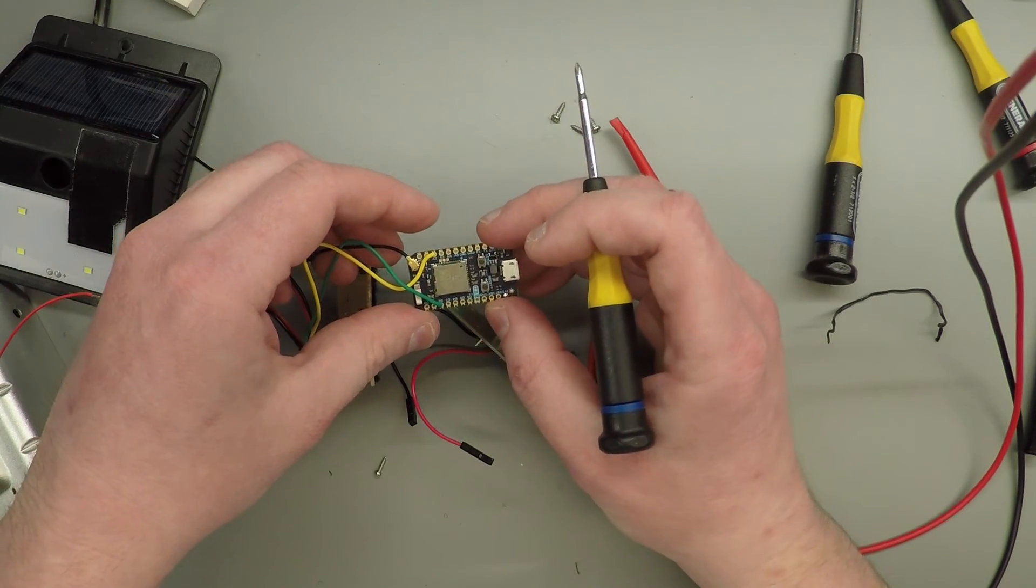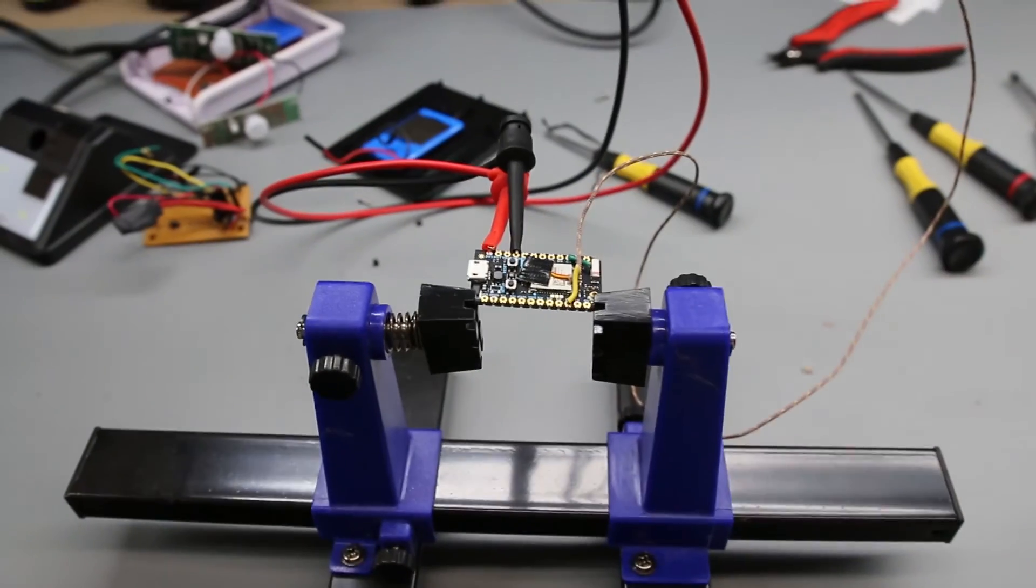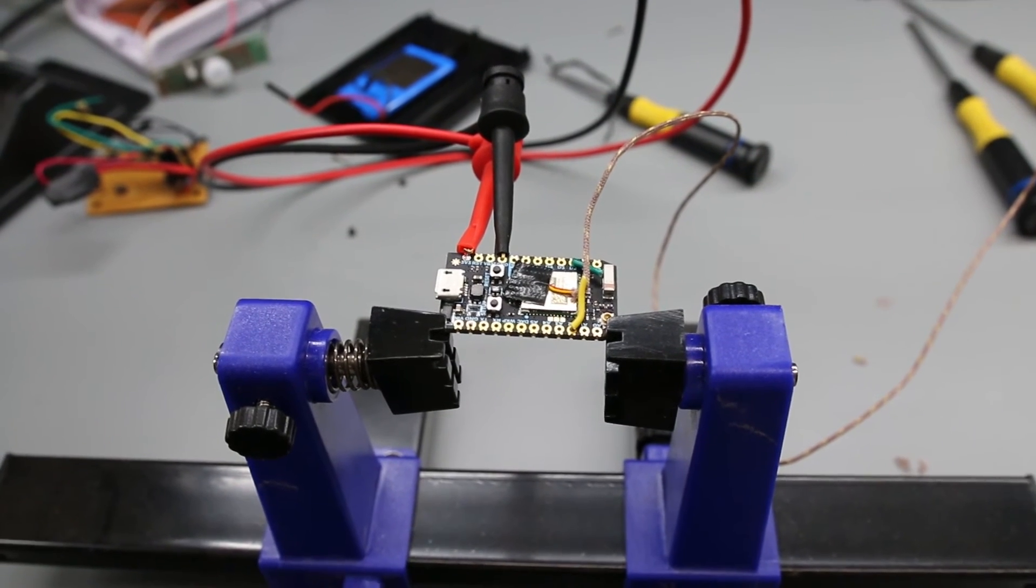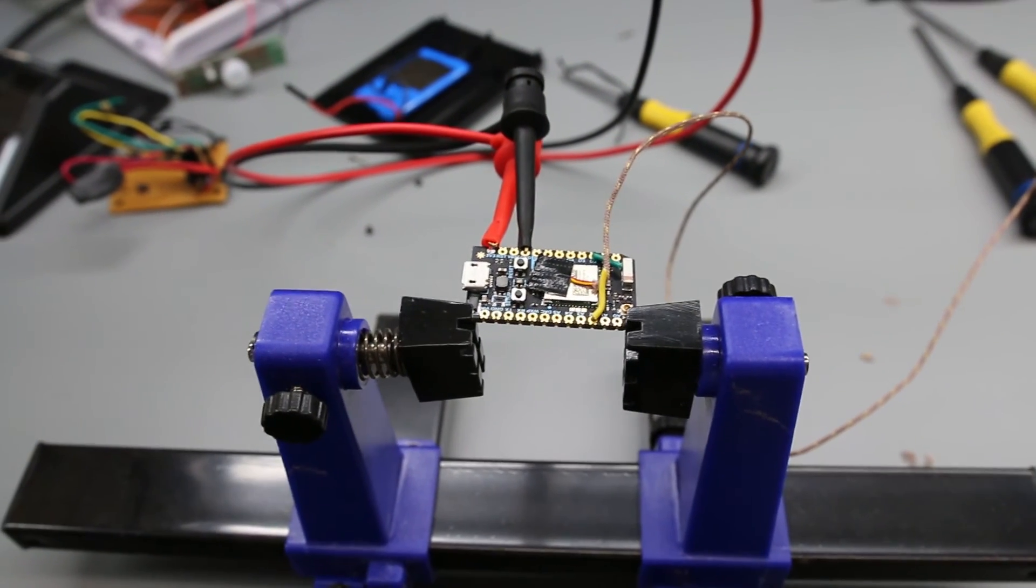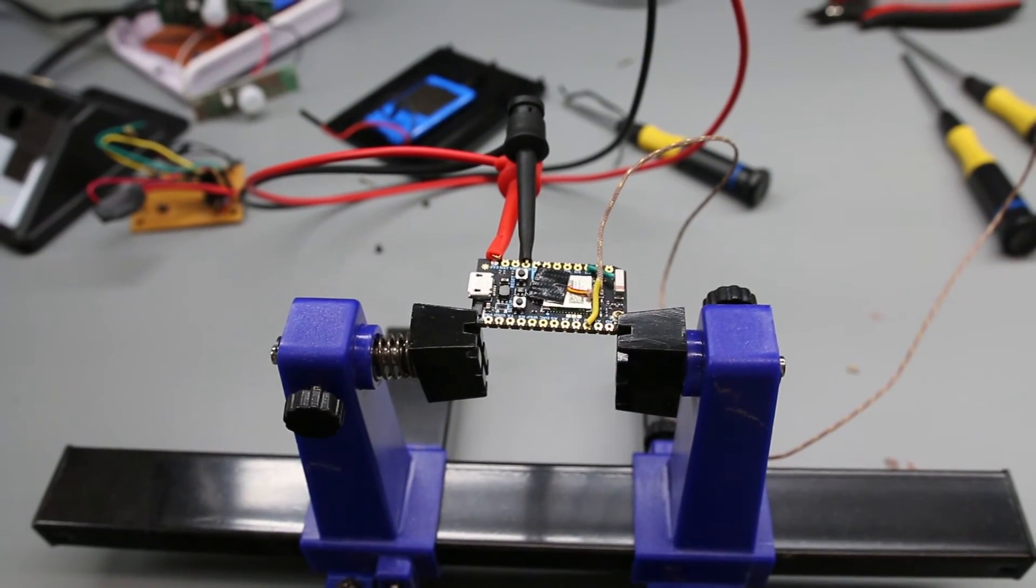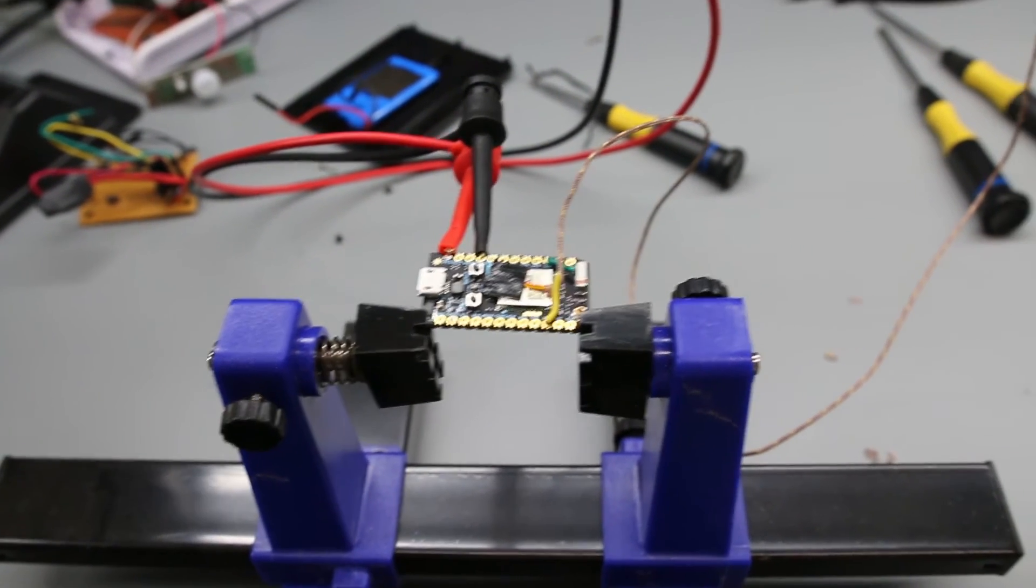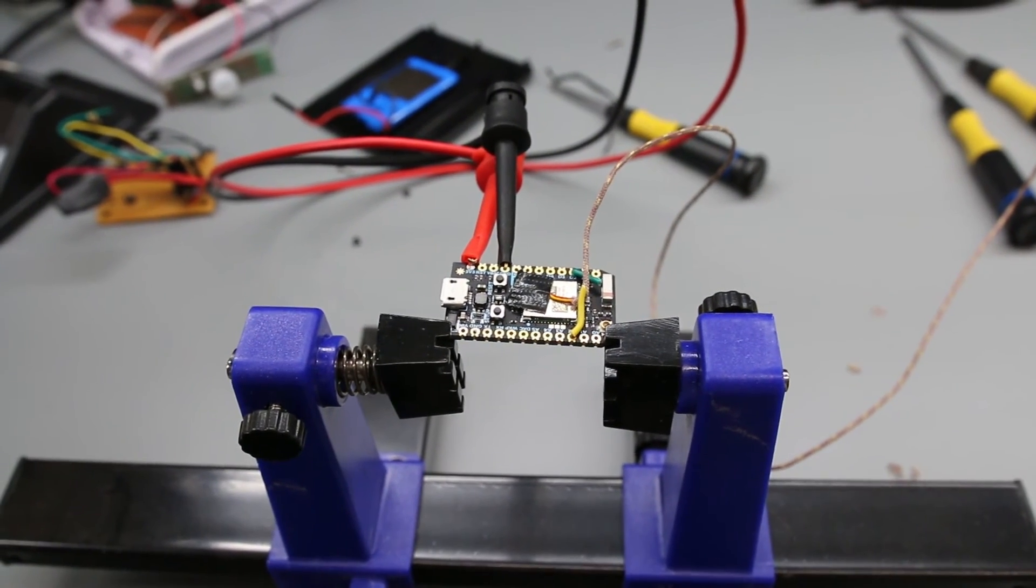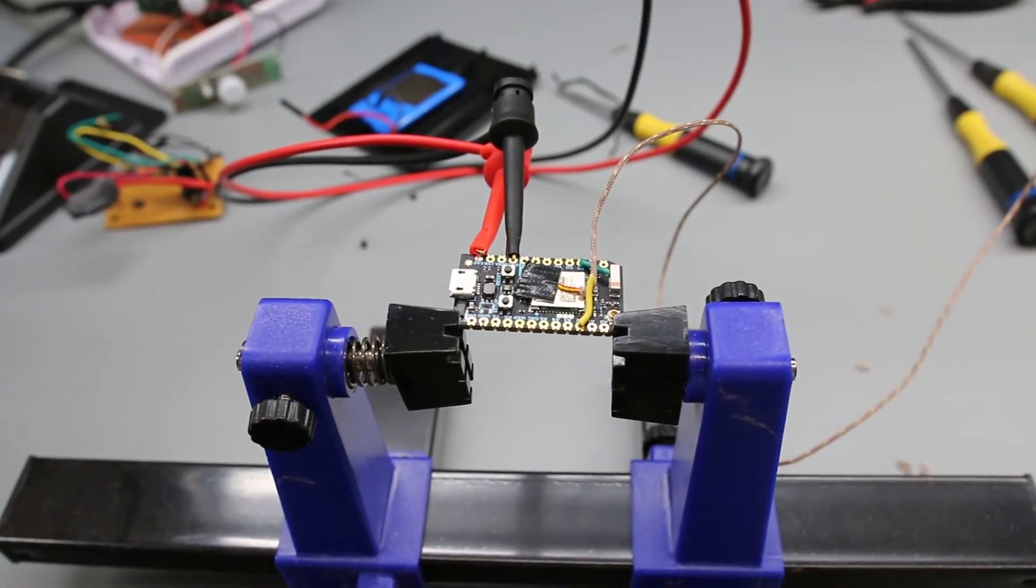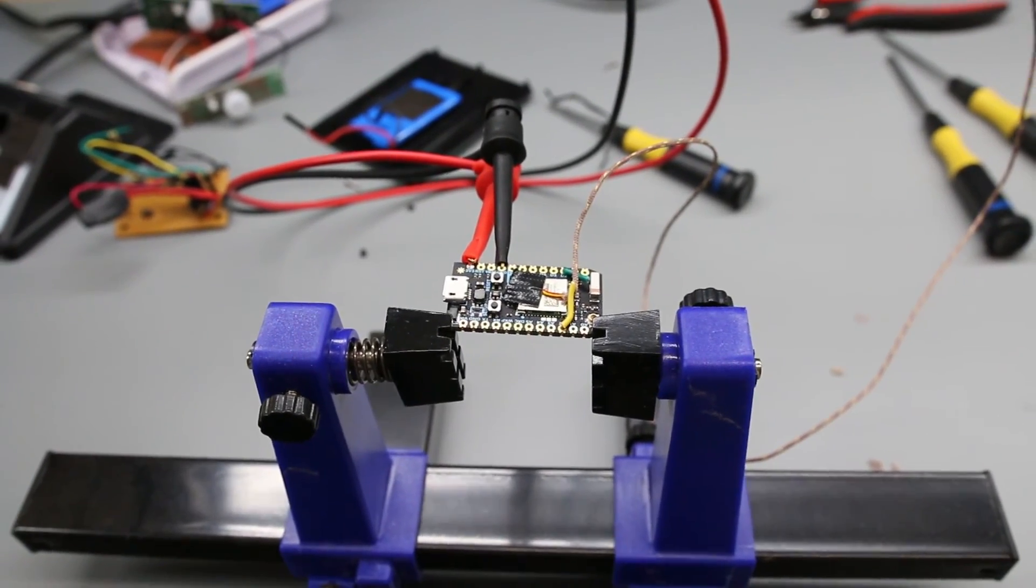All right, so I didn't want to just end the video on that, and I kept the power on for a little bit on the 3.3 volt input on the Particle Photon board. And the main package after a while did get warm, so I attached the thermocouple here.